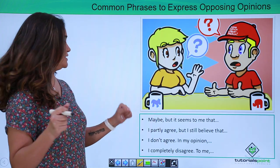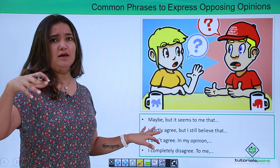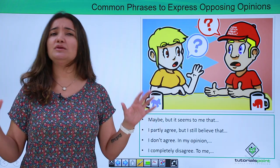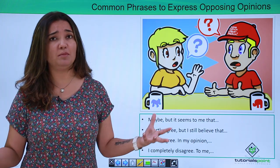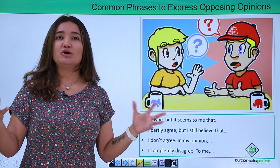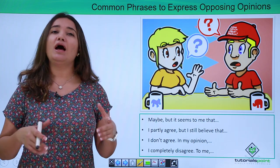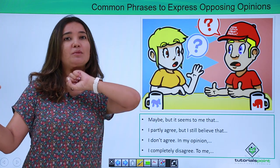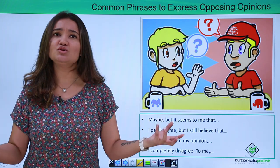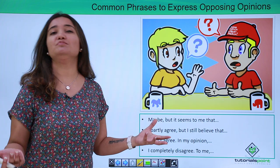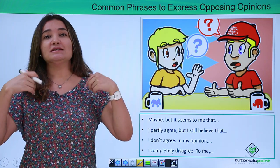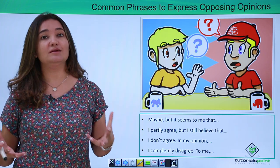Here is the first expression: 'Maybe, but it seems to me that.' So you are starting your sentence with 'maybe.' When you say 'maybe,' you are presenting doubt in whatever the person right in front of you is saying. For example: 'Well, I think that this suggestion is going to make a huge amount of difference to this project.' You respond: 'Maybe, but according to me' or 'maybe, but it seems to me that.' Starting with 'maybe' signals that you are opposing the opinion.